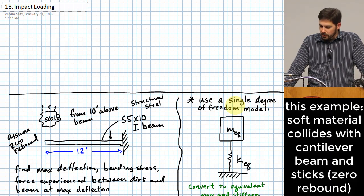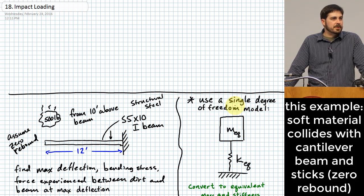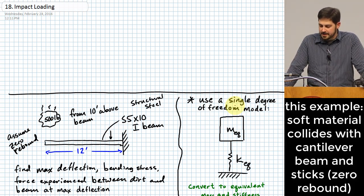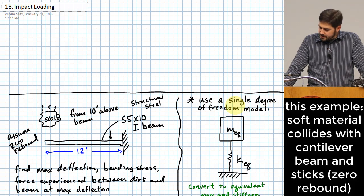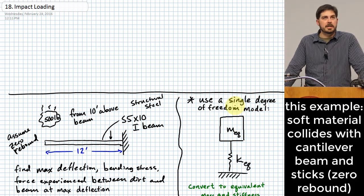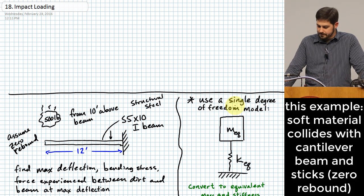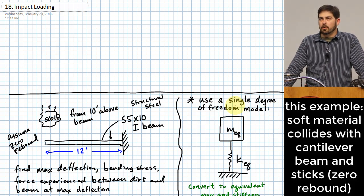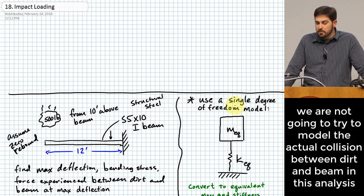This problem is a little bit different. We are looking at a situation where we have a soft material — think of a big lump of soil — that we are going to allow to fall from a 10-foot height onto a beam. The beam type is given; it's made out of structural steel. What we're going to try to do is find the maximum deflection the beam experiences, how much bending stress occurs in the beam, and the force experienced between the dirt and the beam at maximum deflection.